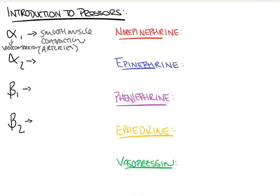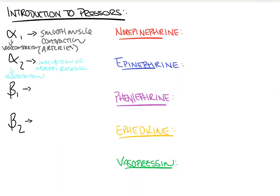Alpha-2 receptors are located primarily in the central and peripheral nervous system. In relation to the cardiovascular system, at the smooth muscle presynaptic cleft, activation leads to inhibition of norepinephrine release into the cleft. Because norepinephrine cannot be released, this leads to vasodilation, although it should be noted there are some vasoconstrictive effects at first.